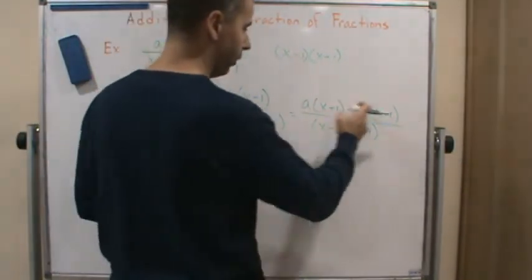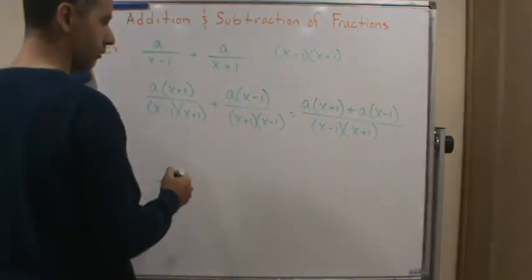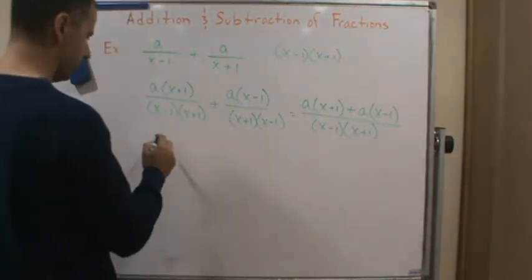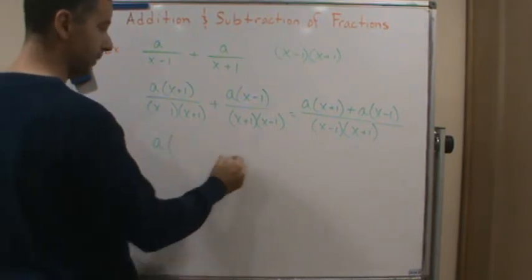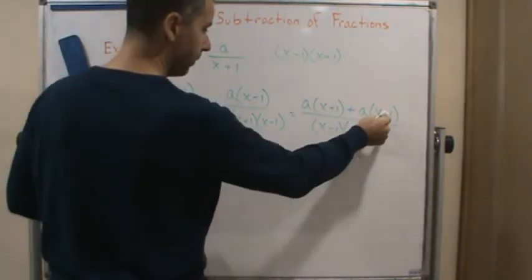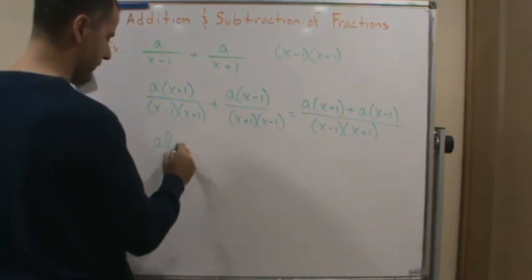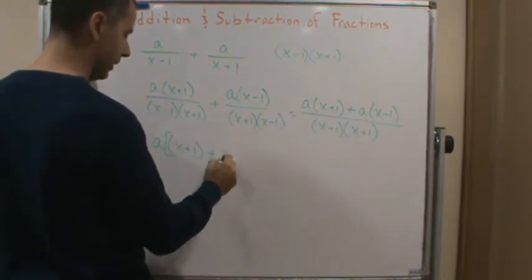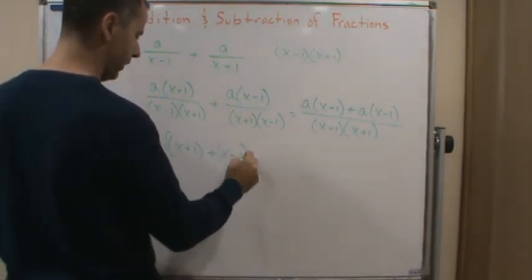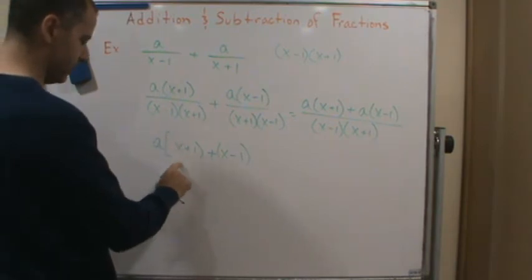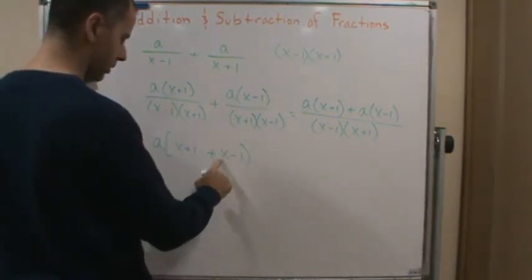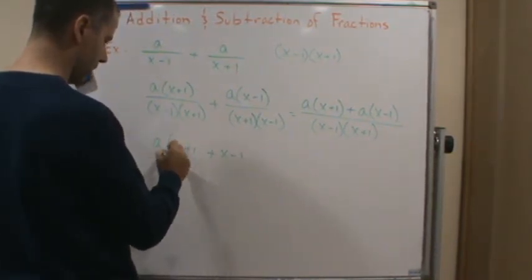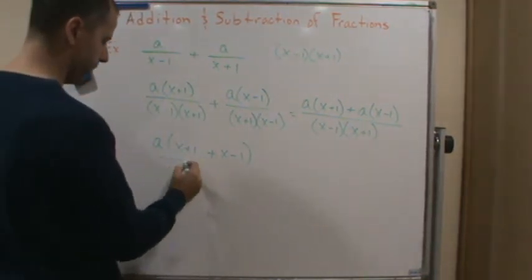So now let's see if we can simplify this thing. We can factor out an a, right? I've got a common factor here and a common factor here. So I can factor out the a and write this as a times this plus this. So this is going to be x plus 1 plus x minus 1.